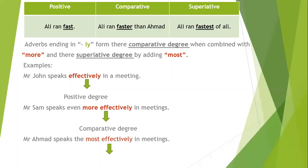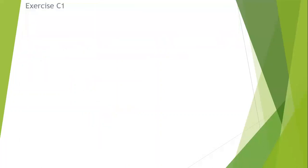For the superlative: 'Mr. Ahmed speaks most effectively in meetings.' Since 'effectively' ends in '-ly', we form its superlative degree by adding 'most' before it, giving us 'most effectively.' This is the superlative degree. Now let's come to exercise C1 of your unit, which is related to this explanation.